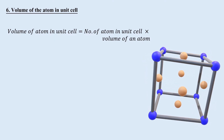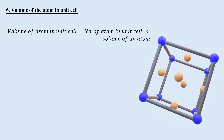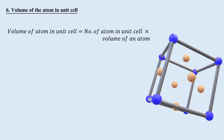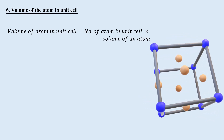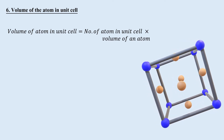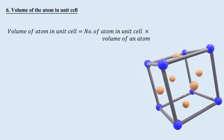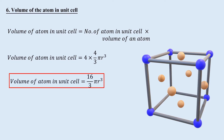Volume of the atoms in the unit cell: Assuming all atoms have radius R, the volume of one atom is (4/3)πR³. Since the total number of atoms inside the unit cell is 4, the volume of atoms in the unit cell is (16/3)πR³.